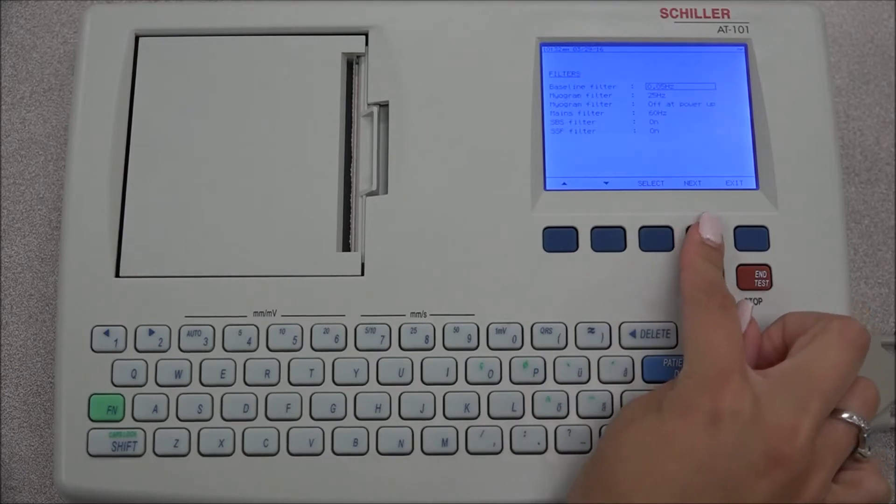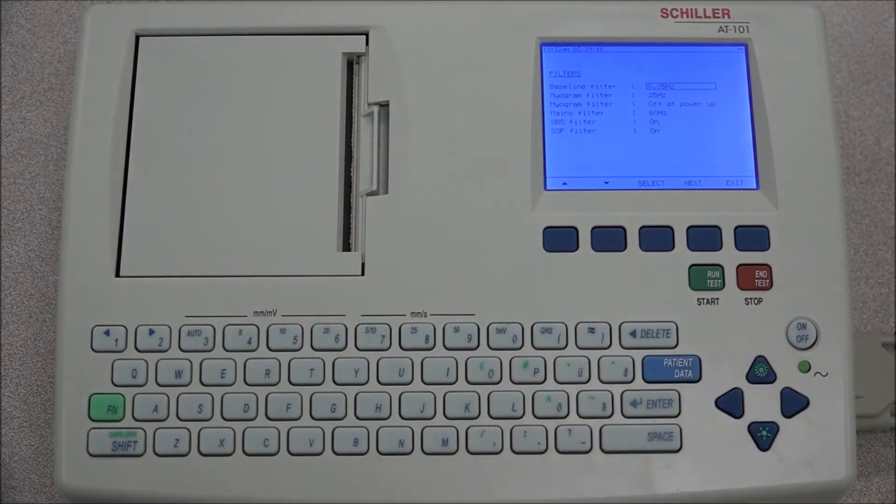Under the filter tab, there are five different filters which can be set individually as follows: the baseline filter, myogram filter, mains filter, baseline stabilizer filter, and smoothing filter.